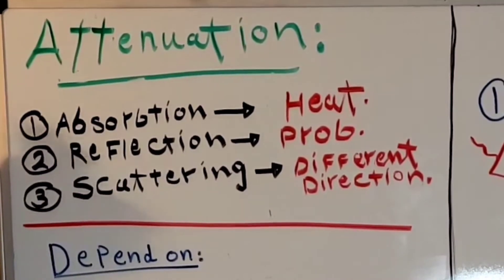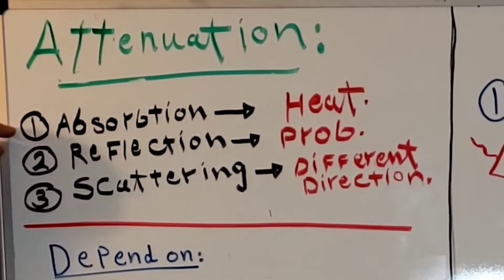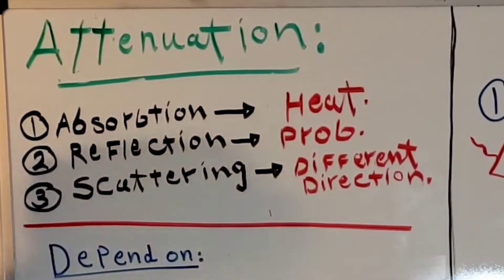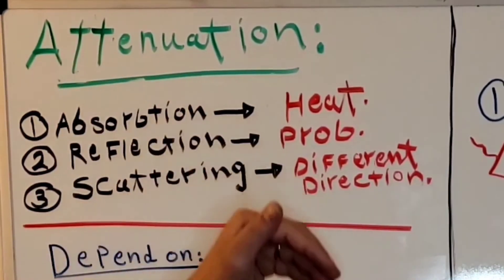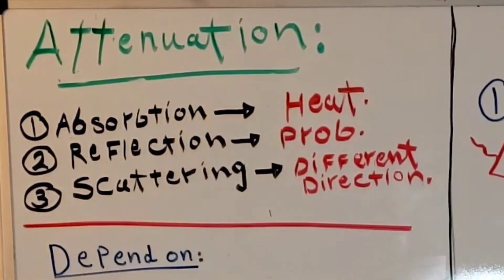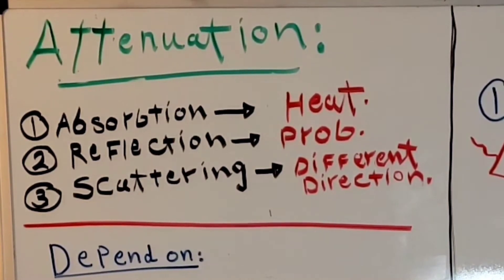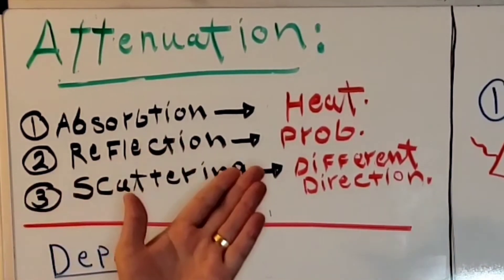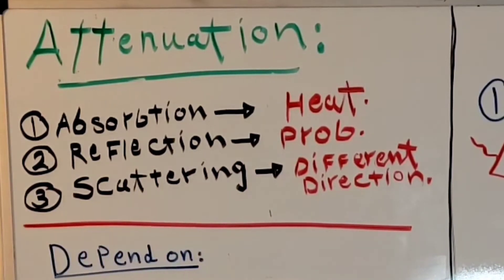Attenuation happens in three events. The first one is absorption, and absorption is the conversion of ultrasound energy to heat. The second one is reflection, and reflection happens when sound waves strike a boundary and reflect back — either back to the transducer or somewhere else, depending on the type of reflector.